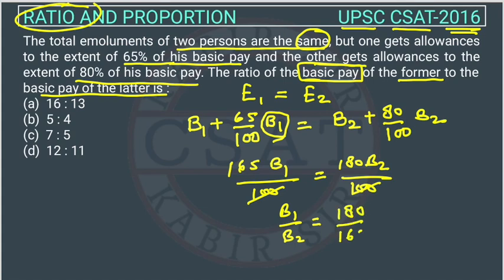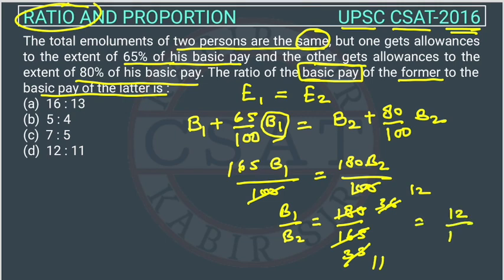We can simplify 180 over 165 by dividing by 5, and then dividing again by 3, giving us the ratio 12 by 11. So the answer is option D.